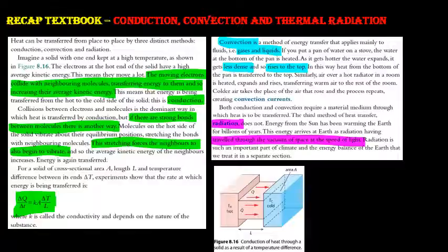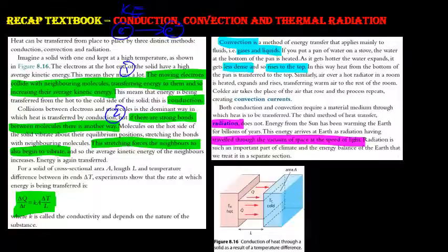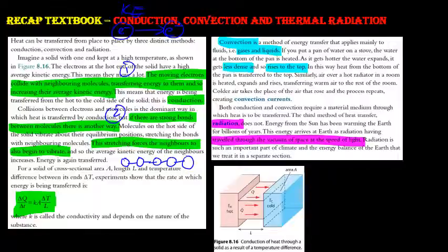You all know about conduction, convection, and thermal radiation. For conduction, it is more precisely defined in IB. The first definition: an electron may collide with another electron and their kinetic energy will be transferred from one to another — that is direct conduction. The second way is to imagine particles connected by bonds; if one particle moves, forces are transferred like waves so neighboring particles also move.